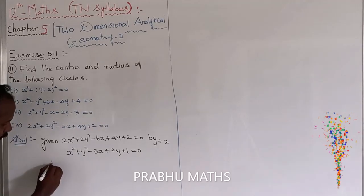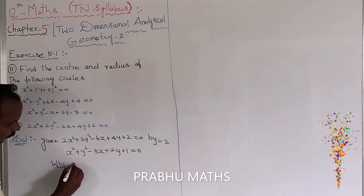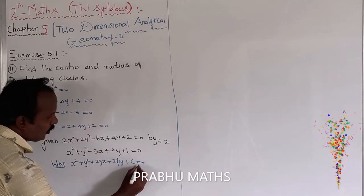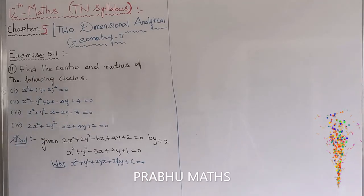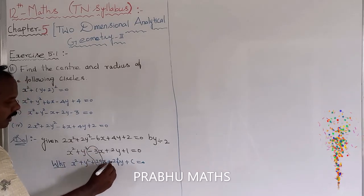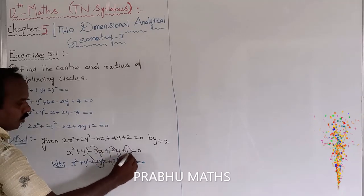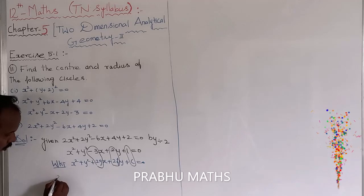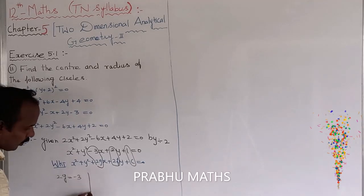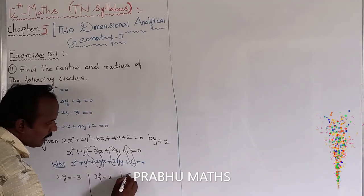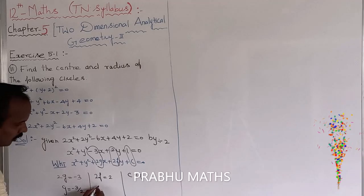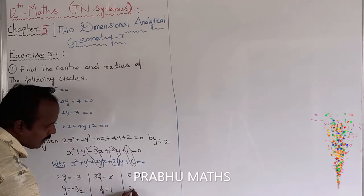The standard general form of a circle is: x squared plus y squared plus 2gx plus 2fy plus c equals 0. Comparing the two equations: 2g equals minus 3, so g equals minus 3 by 2; 2f equals 2, so f equals 1; and c equals 1.